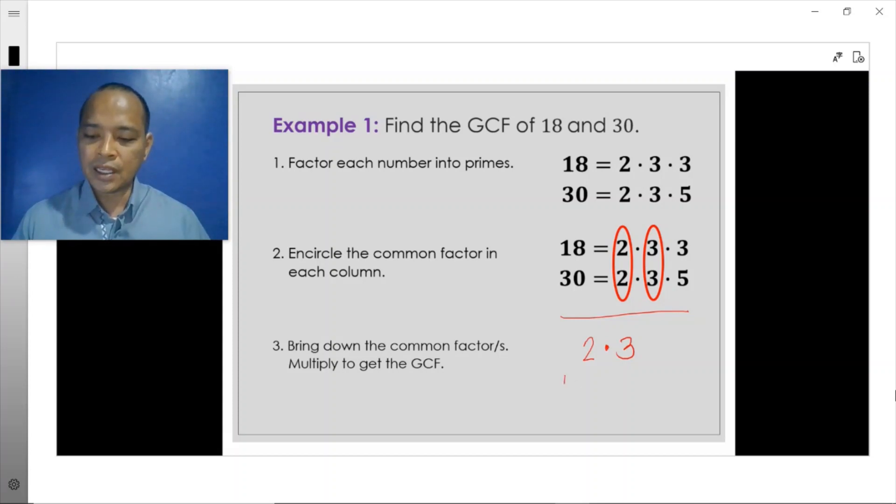Multiplying these numbers will give us the GCF, and 2 times 3 is equal to 6. Therefore, the GCF of 18 and 30 is 6.